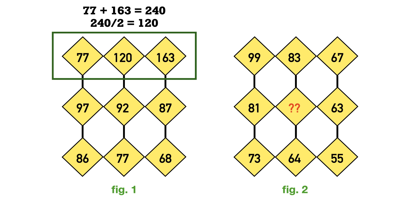So here in the first row of numbers, add first and last number, that is 77 plus 163, which equals 240, and divide the result by 2. The resulting number is the second number, which is 120.